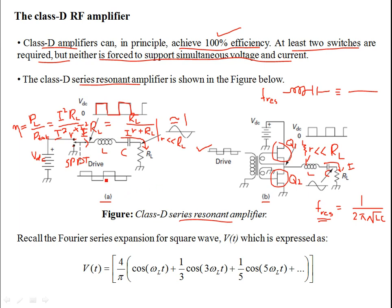Configuration B is a more practical version of what is shown in part A. Although both use switches, in part B you can see a push-pull configuration of JFETs through a center-tap transformer, driven 180 degrees out of phase. The difference is that there is no DC component in the symmetric drive — it's flat at zero bias. So we consider the drive signal as ±VDC/2.